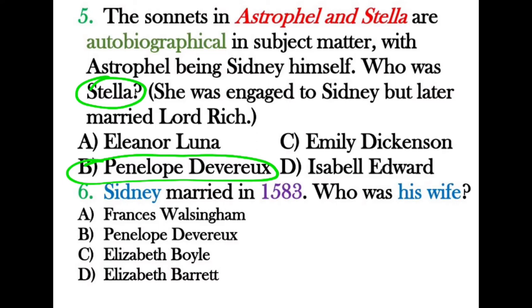Question six: Sidney married in 1583, a year before his death. His wife was Frances Walsingham. Penelope Devereux cannot be correct because she later married Lord Rich — Sidney loved her but could not marry her. Elizabeth Boyle was the wife of Edmund Spencer, and Elizabeth Barrett was the wife of Robert Browning.